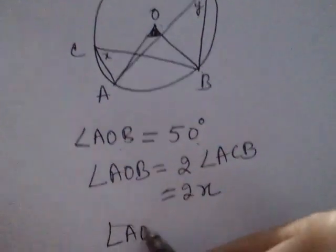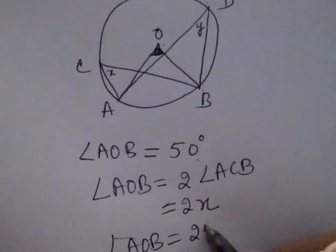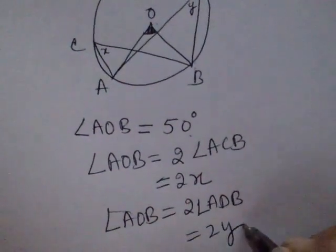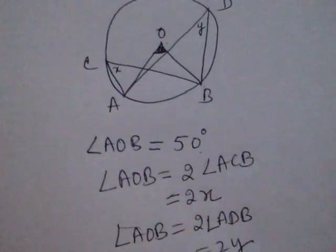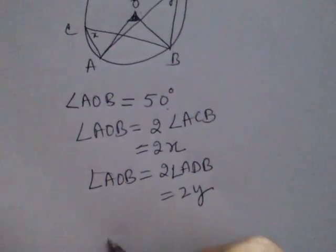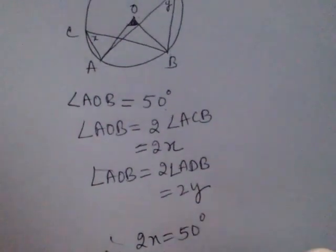Also, angle AOB is twice angle ADB, that is 2Y. We know that angle AOB is 50 degrees. Therefore, 2X equals 50 degrees.